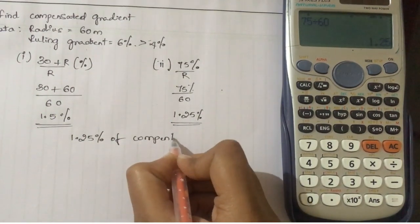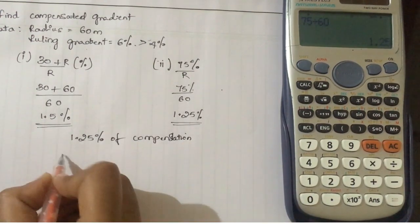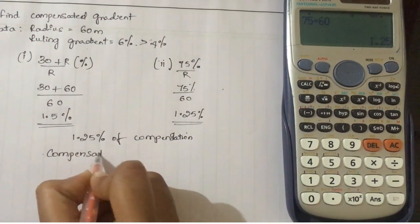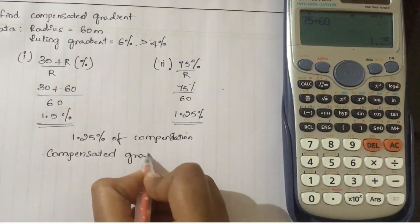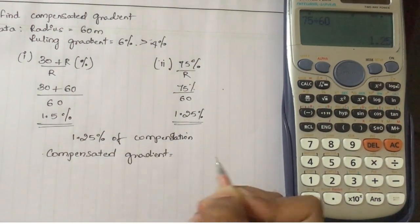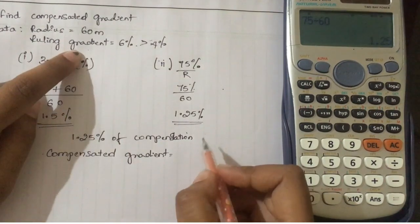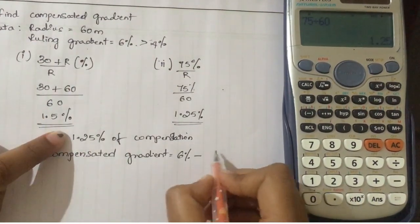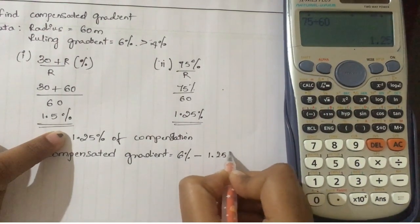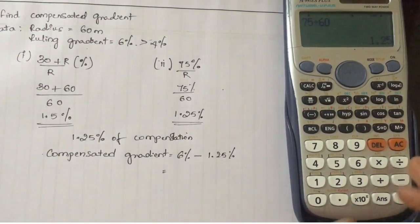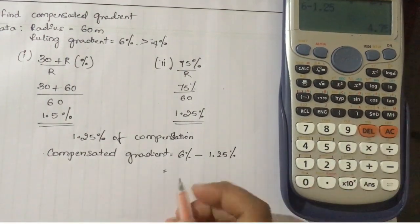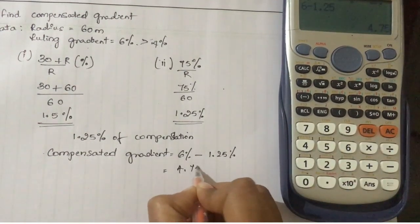So the compensated gradient will be: we need to subtract from the ruling gradient, that is 6 percent minus 1.25 percent, which gives 4.75 percent. So that will be 4.75 percent.